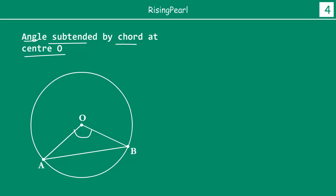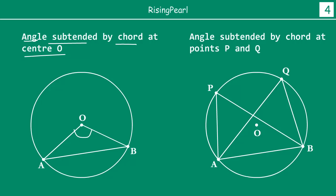But if you also want to find out the angle subtended by the chord at points P and Q, where P and Q are two other points on the circle — the same chord AB, but instead of finding the angle at the center, we take any two points P and Q on the circle. This will be the angle subtended by chord AB at point P, and this will be the angle subtended by chord AB at point Q.